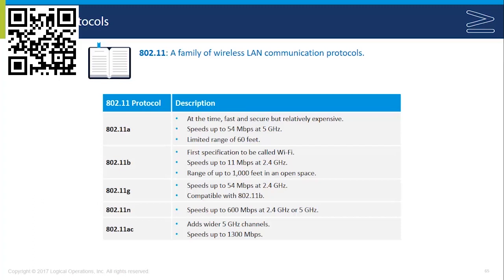802.11n has theoretical speed outputs up to 600 Mbps and can operate in either the 2.4 GHz or 5 GHz frequency range. 802.11ac is the latest, adding wider channels at the 5 GHz band and theoretically increasing speeds up to 1.3 Gbps. These speeds are theoretical because performance depends heavily on distance and interference, and in practical terms we rarely see those maximum speeds.